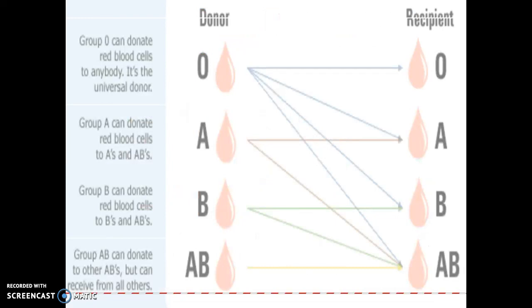When giving blood, remember: type O blood means you have no A or B antigens. So you're the universal donor — you can donate to anybody. Anybody who receives type O blood is fine with it.